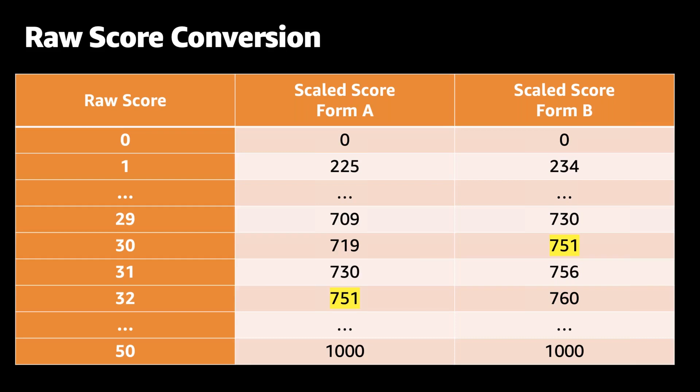However, since form B has slightly more difficult questions than form A, the candidate presented with form B only needs to answer 30 questions correctly to receive the same passing score. Because form B is more difficult, it would have been unfair to candidates who saw these more difficult questions unless the raw passing score for them was adjusted.